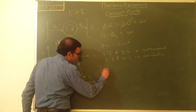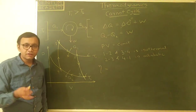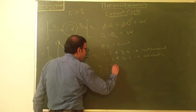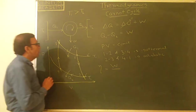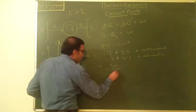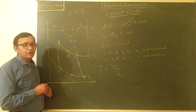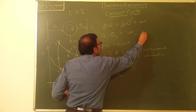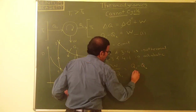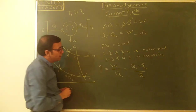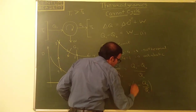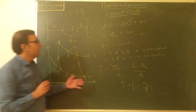The efficiency of any engine is the useful work done divided by the heat energy supplied to the engine. So efficiency = W / Q1. Since W = Q1 − Q2, this becomes efficiency = (Q1 − Q2) / Q1 = 1 − Q2/Q1. This is the efficiency of the Carnot cycle.